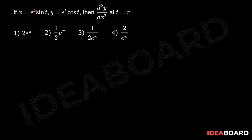If x equals e to the power t times sin t, and y equals e to the power t times cos t, then find d²y/dx² at t equals π.